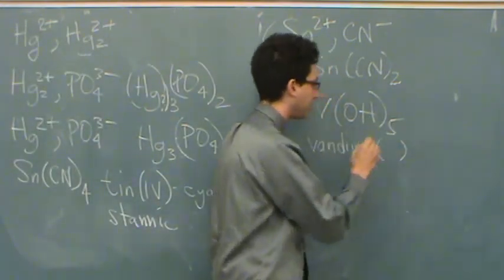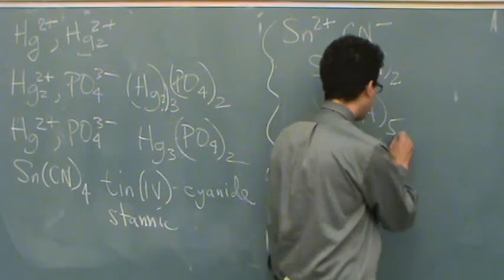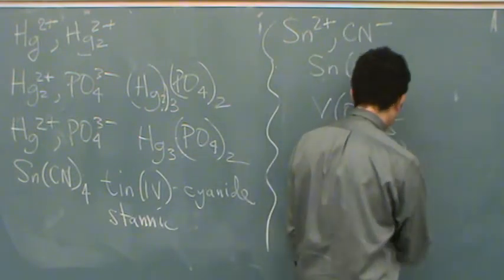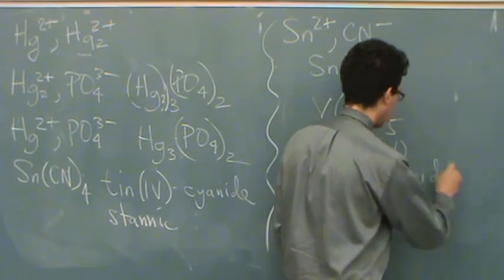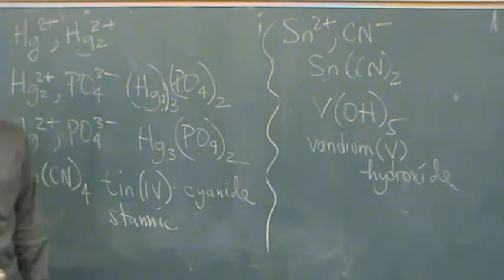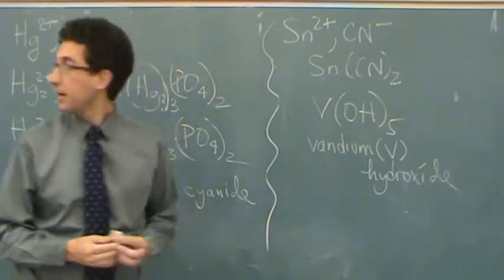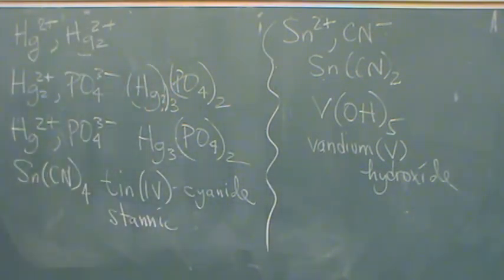What's the charge on vanadium? Five. Five, so I'll put a capital V for five, and then the second name is hydroxide. So vanadium five hydroxide.